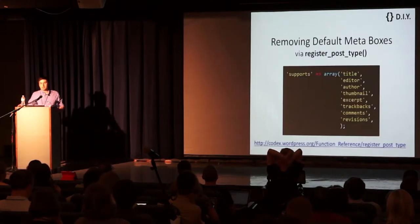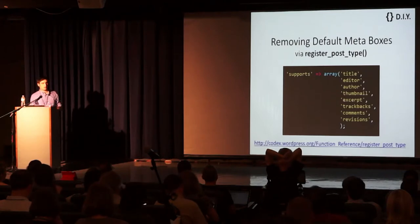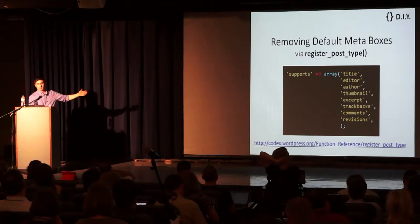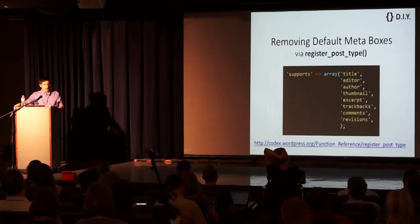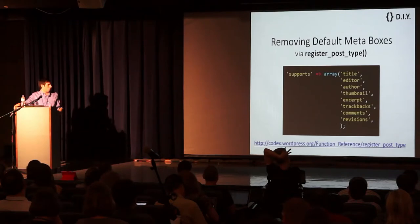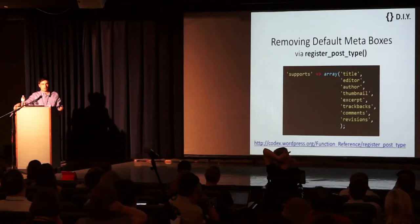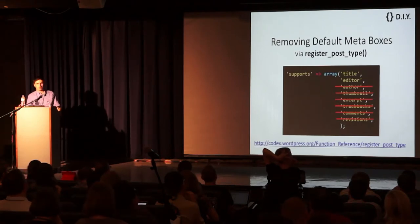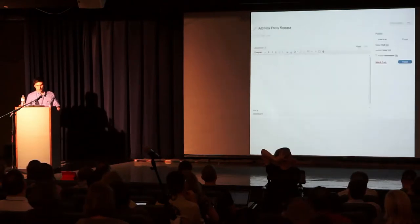The great news is that it's really easy to remove these meta boxes. If I'm setting up my custom post type in PHP, I go into my register_post_type function and there is a parameter called supports which manages all of the default meta boxes — it's mapped to an array listing all of those default meta boxes we saw on the previous screen. Getting rid of them is as simple as removing them from the array. I'll go down the list, determine my client doesn't need each one, delete them, save the file, and that's it. Custom Post Type UI also has a pretty easy interface for doing this exact same thing.